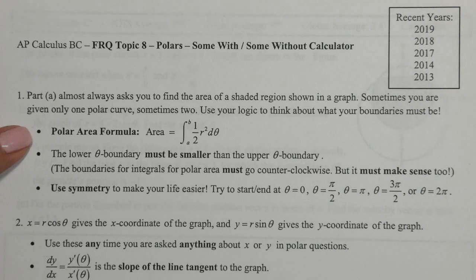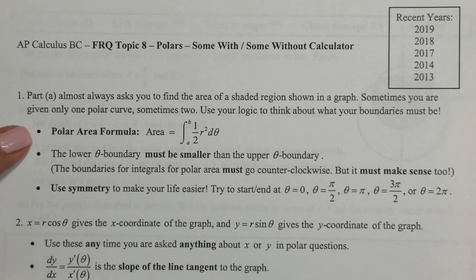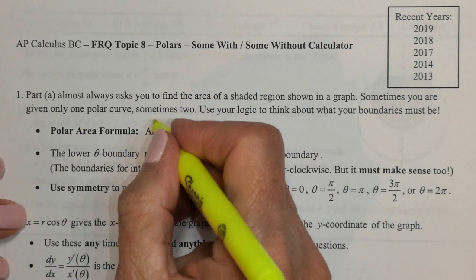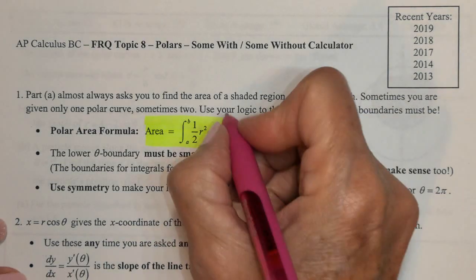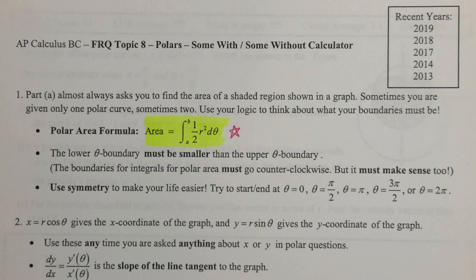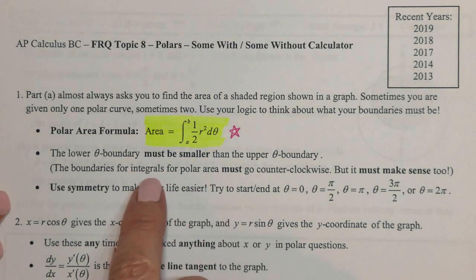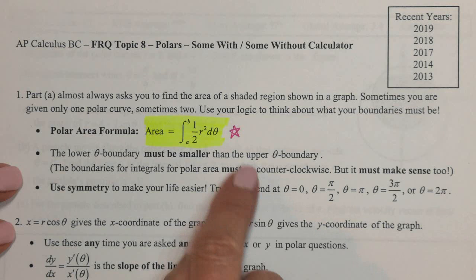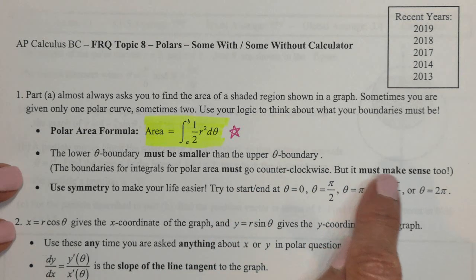Part A almost always asks you to find the area of a shaded region on the graph. Sometimes you're only given one polar curve, sometimes two. Use logic and think about what your boundaries need to be. You need to know the polar area formula — this is definitely going to be on the exam. It's a BC-only topic. Remember that the lower theta boundary must be smaller than the upper theta boundary. That means your boundaries go counter-clockwise because theta is getting bigger.